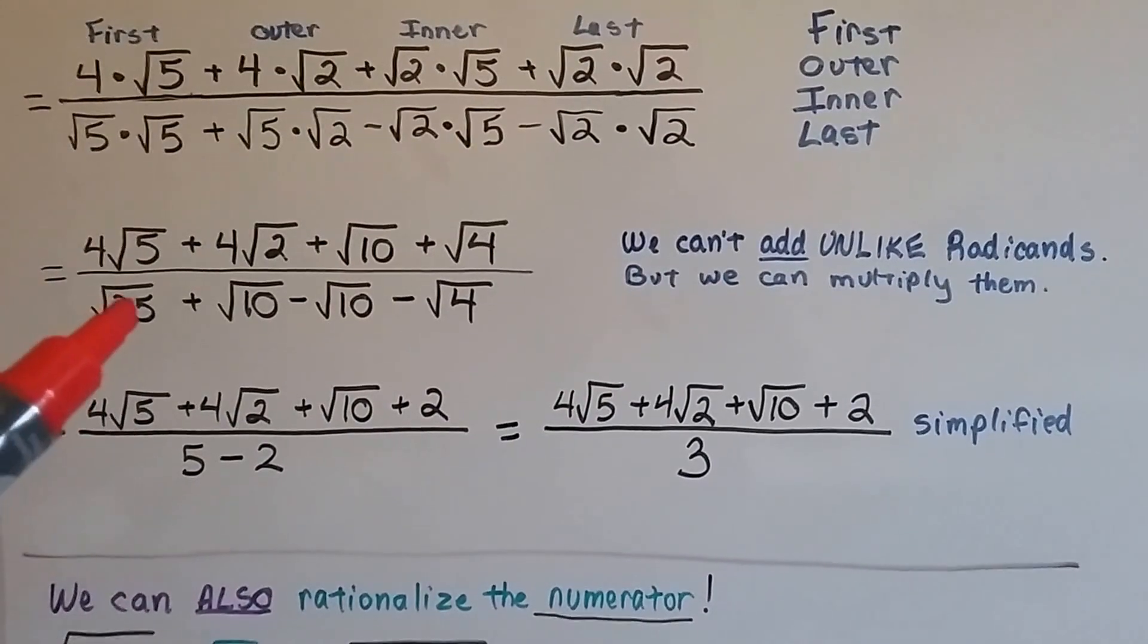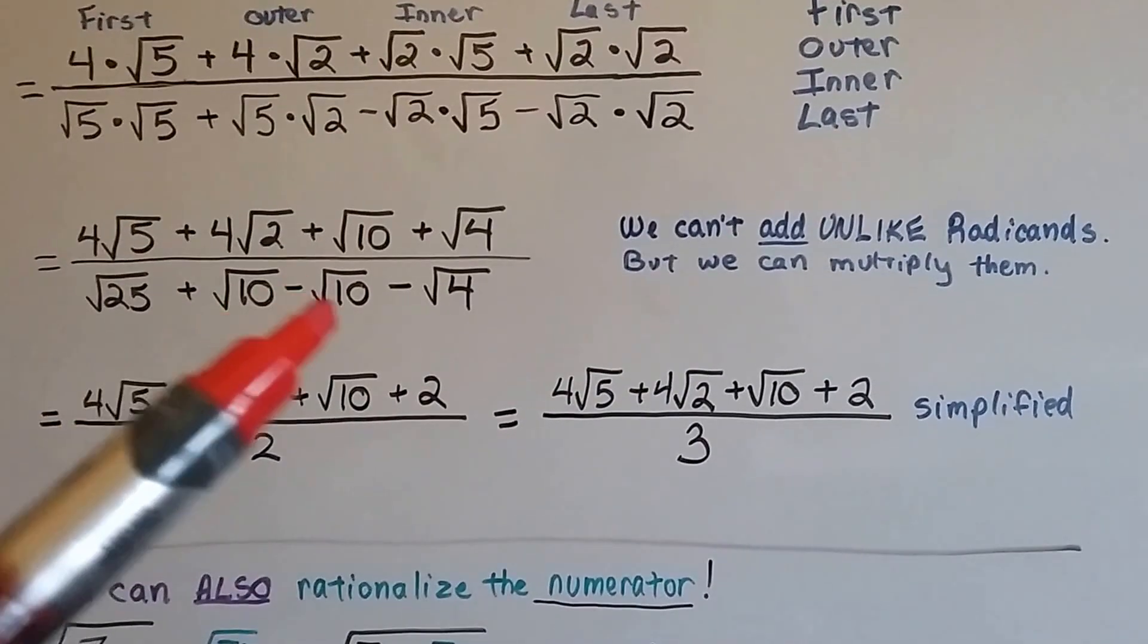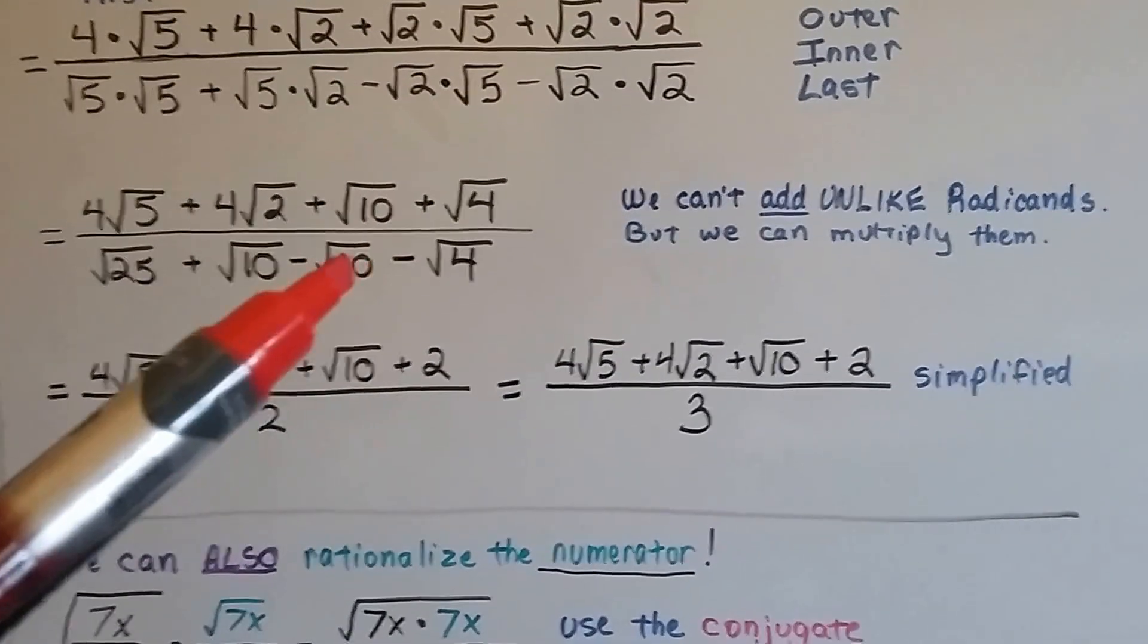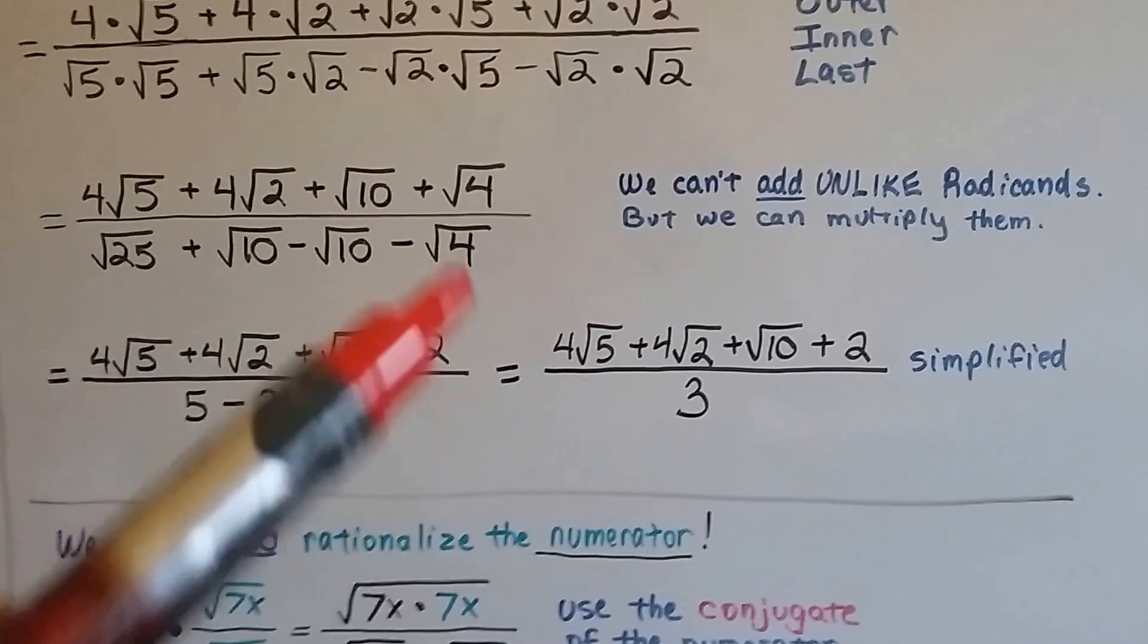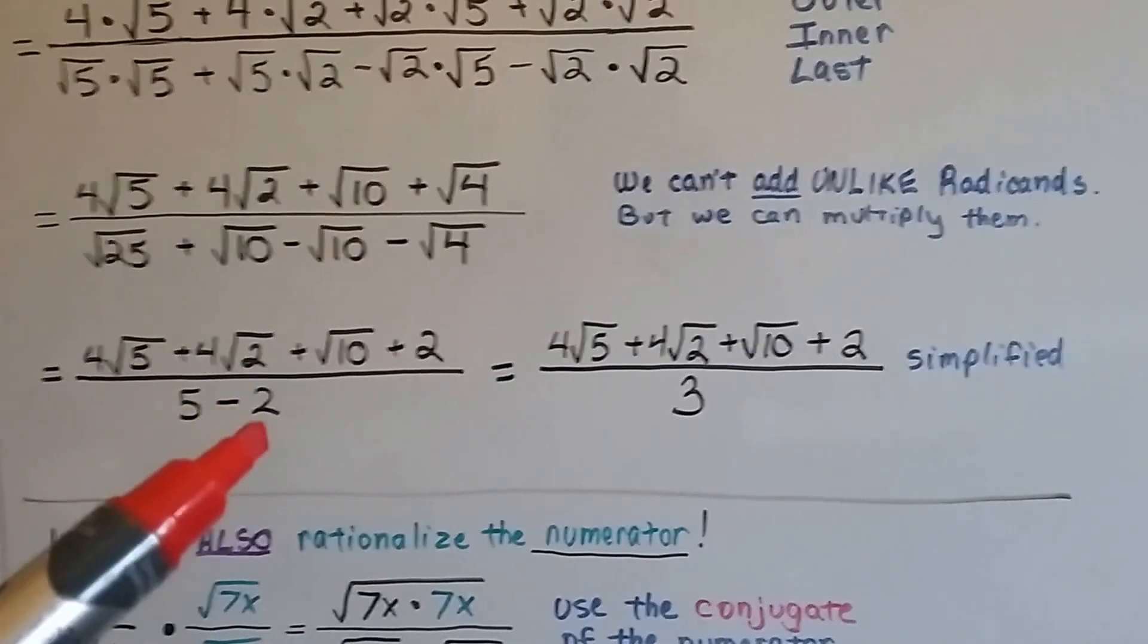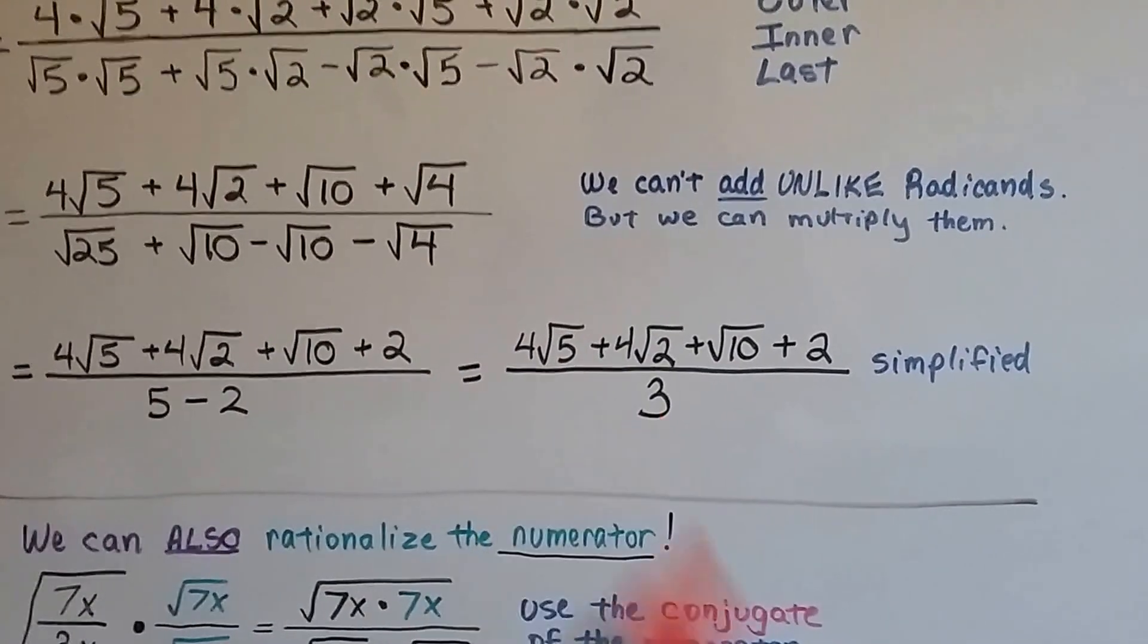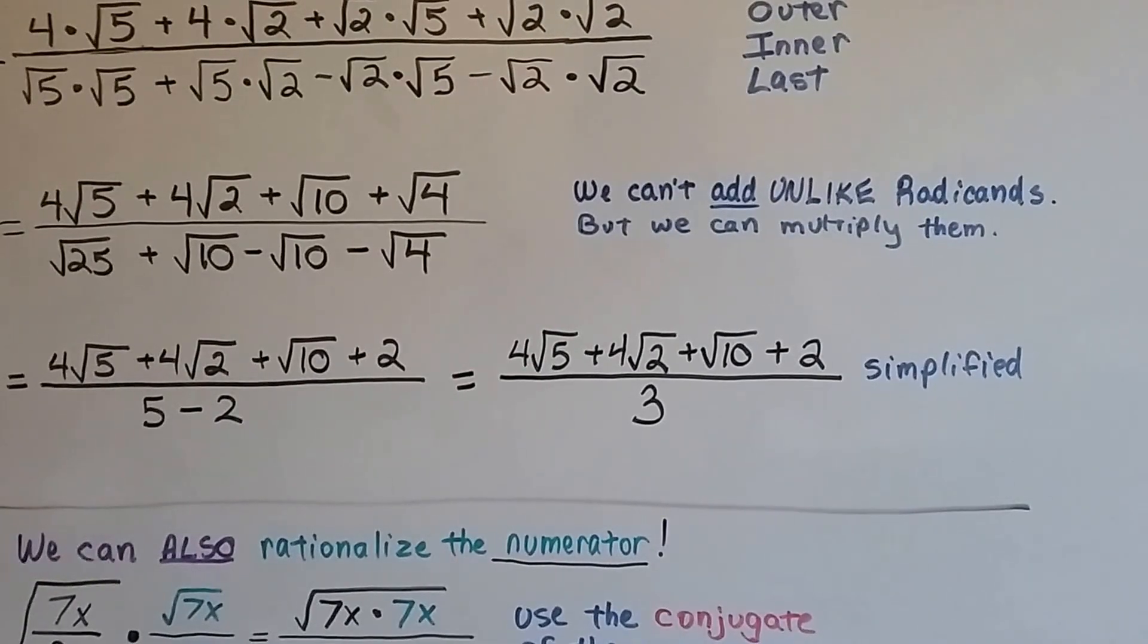So the only simplifying the numerator can get is that square root of 4 can become a 2. Now on the other hand, we've got the square root of 25, which is 5, and this plus square root of 10 minus square root of 10 is going to create a zero pair. They're additive inverses. So we can get rid of that. And then we have minus the square root of 4, which we know is 2. So we have 5 minus 2. So our simplified answer is with a denominator of 3, and we got rid of that radical sign down there.